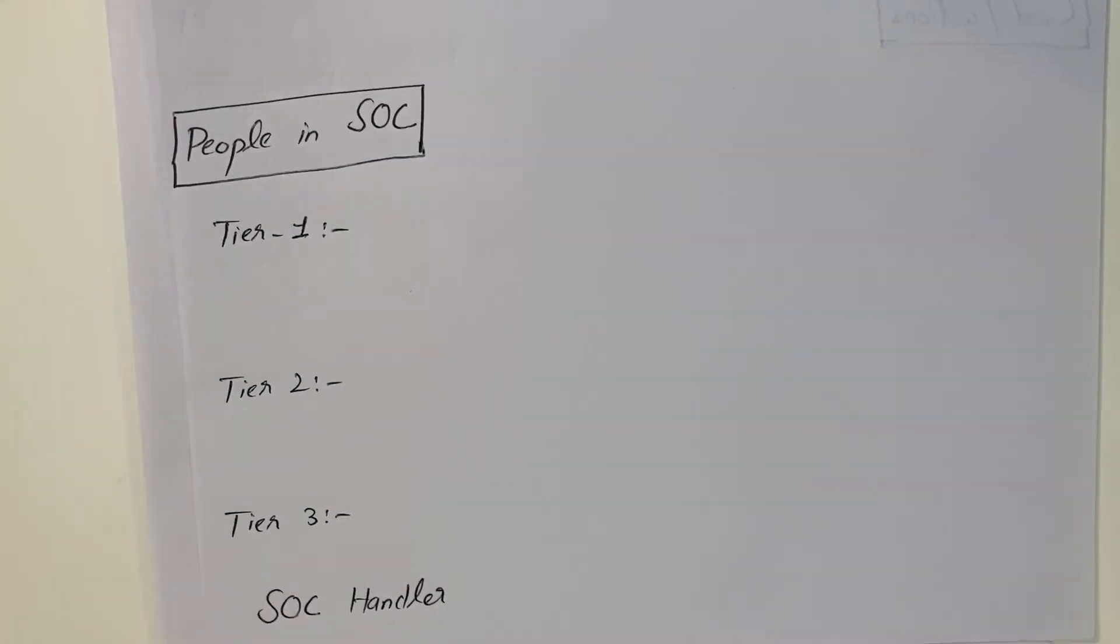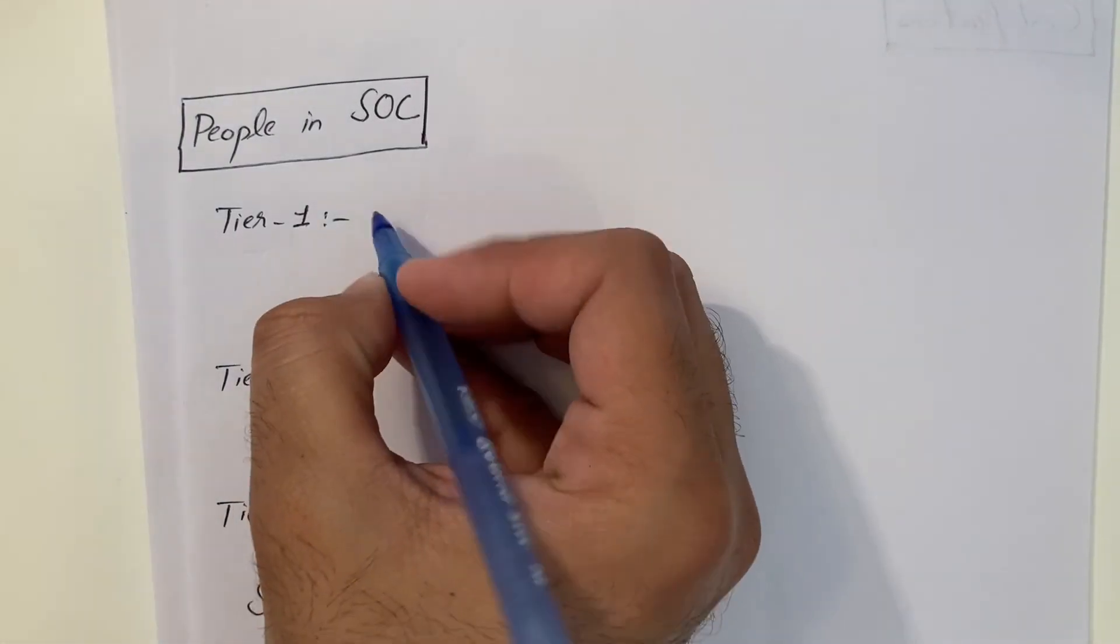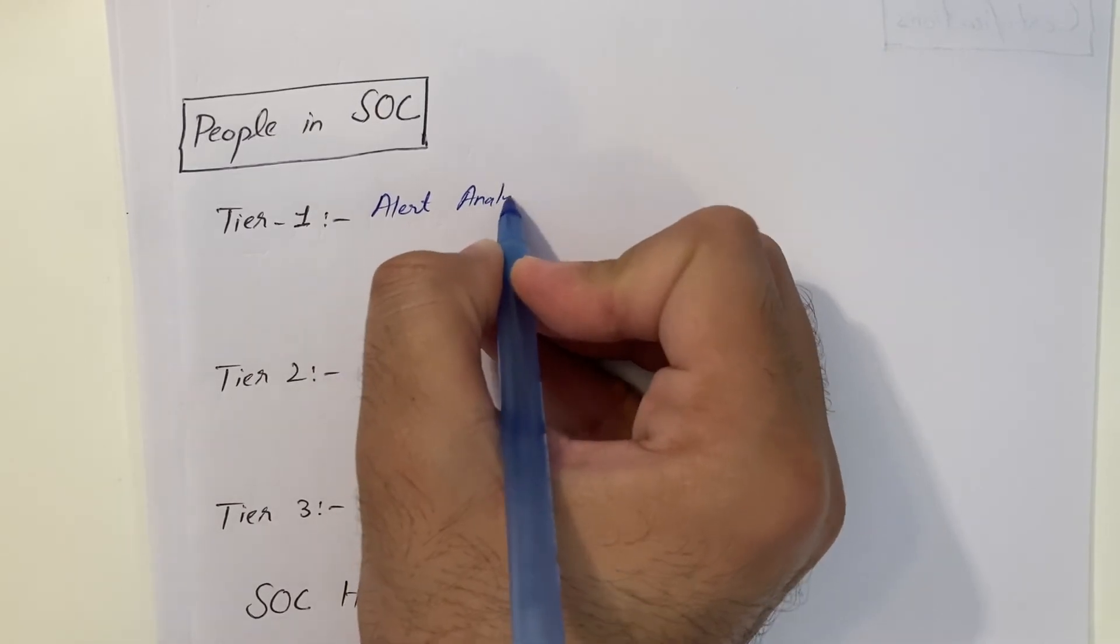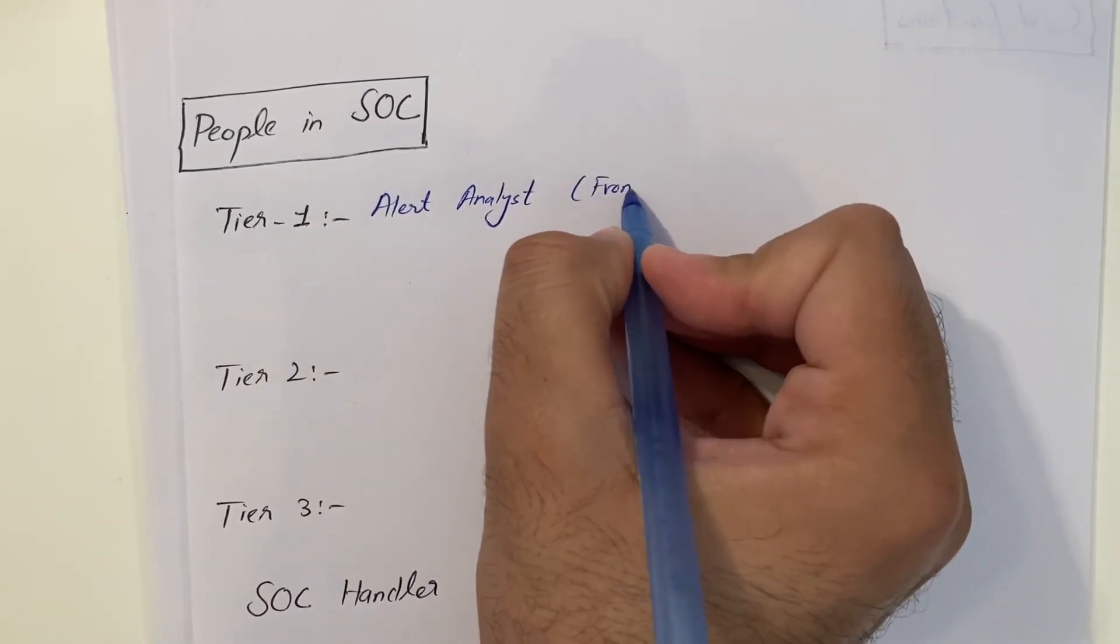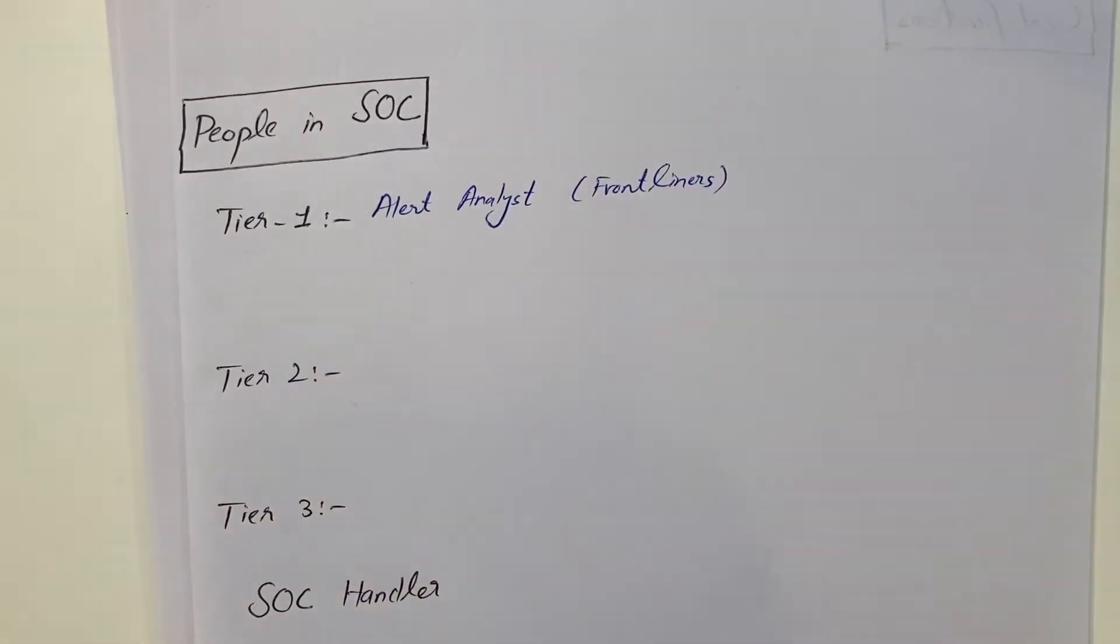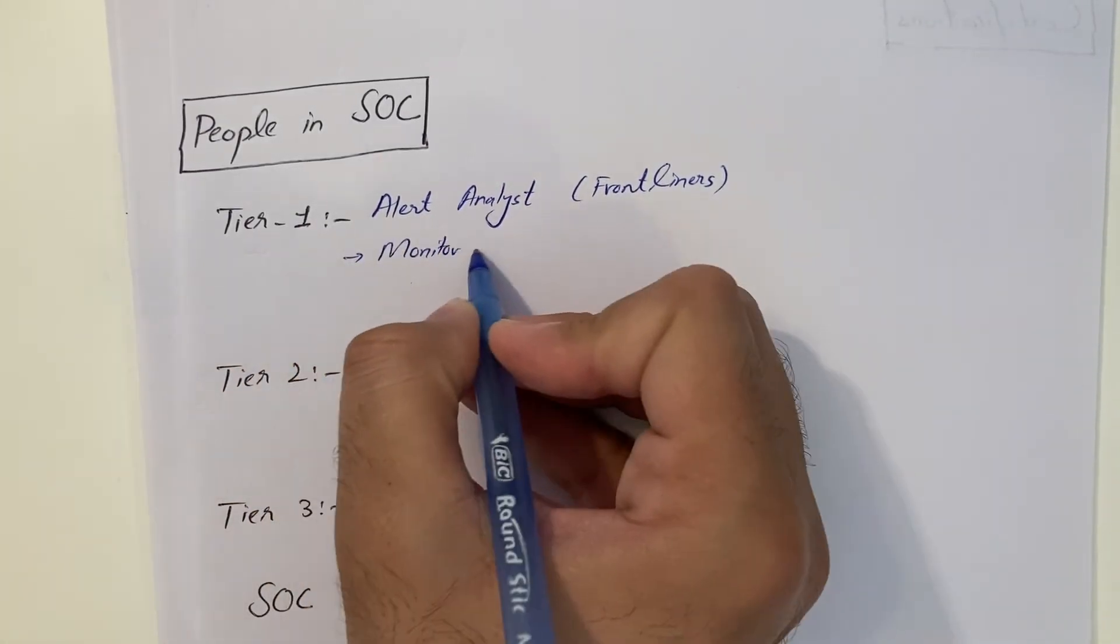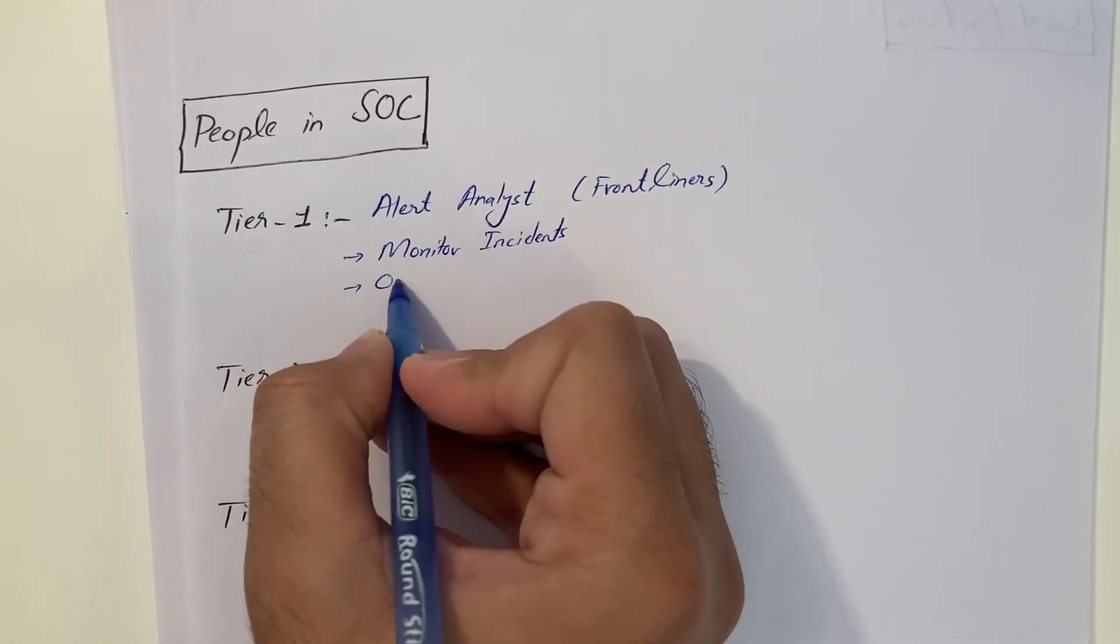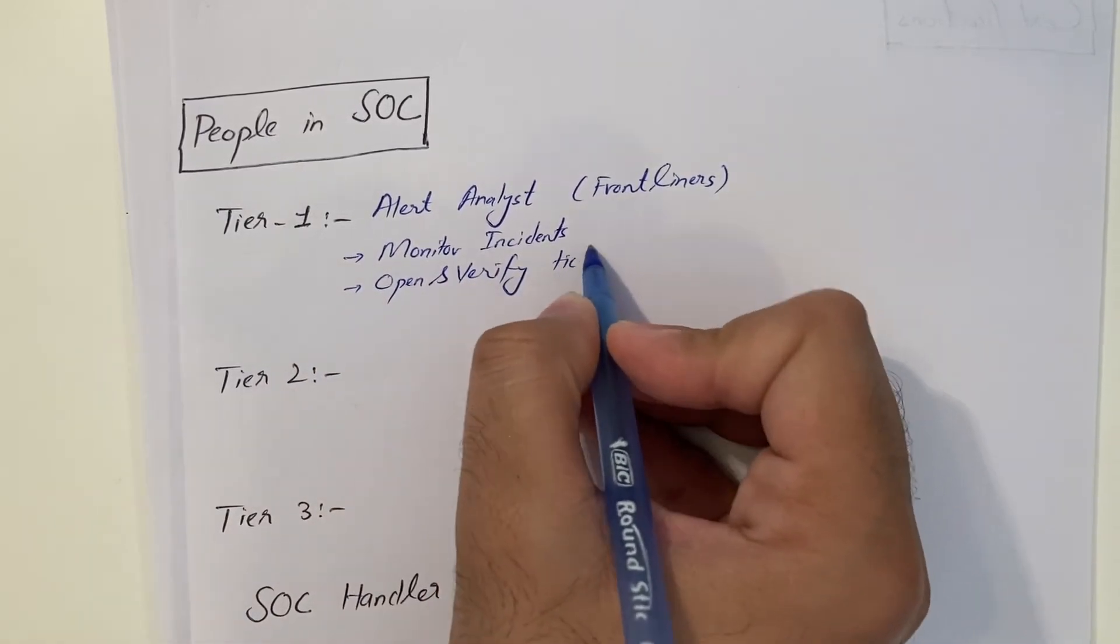The people in the Security Operations Center, we have mainly three tiers. The tier one is called the Alert Analyst. Alert Analysts are the frontliners. They actually monitor incidents. They monitor all type of incidents. They open and verify tickets.